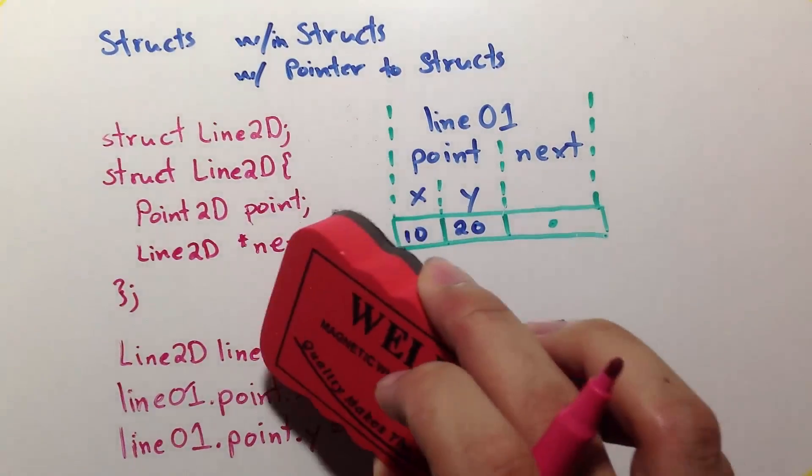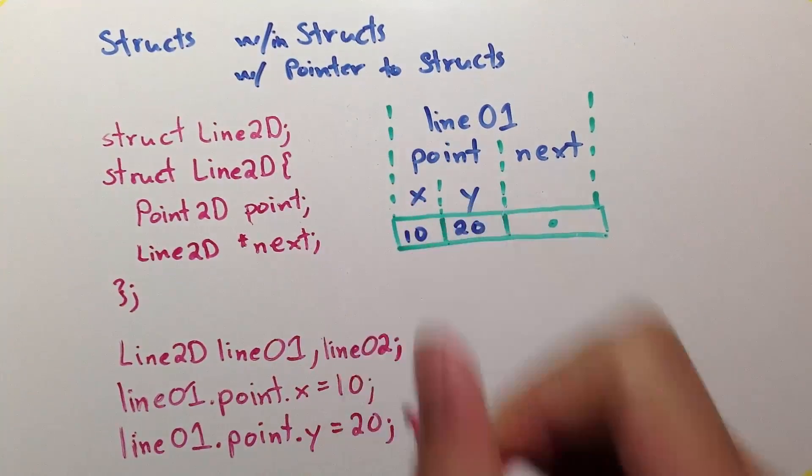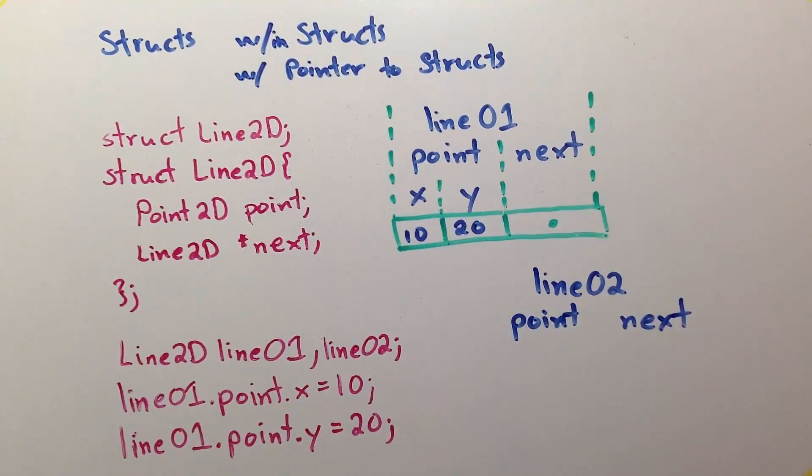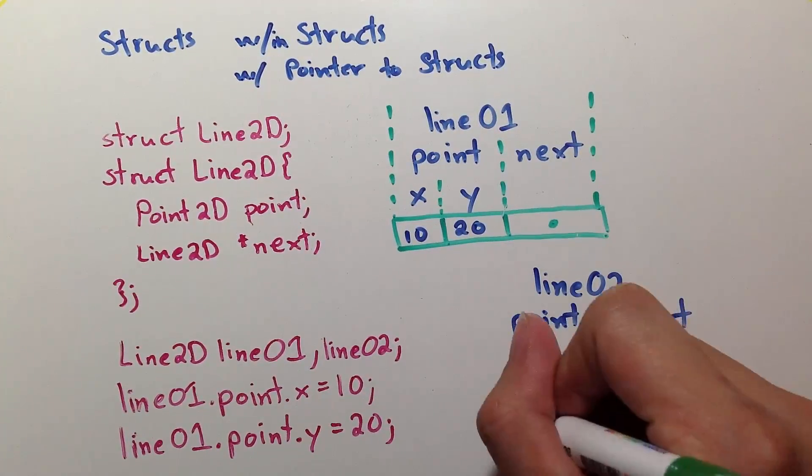Now, let's add another line2d called line02. In memory, it looks similar to line01, but it's located somewhere else. Let me just draw that.